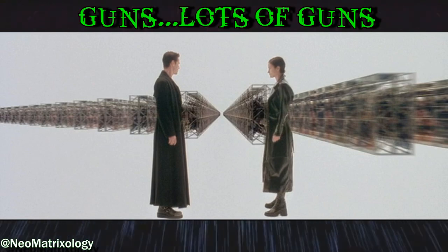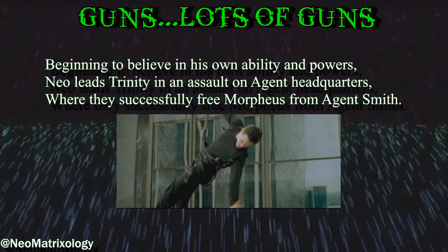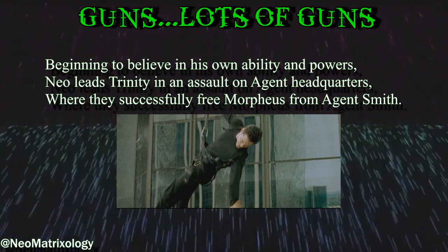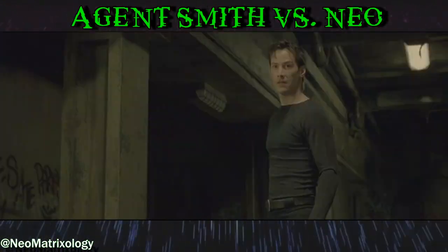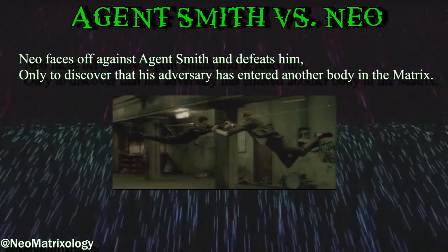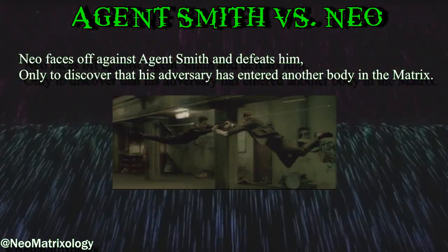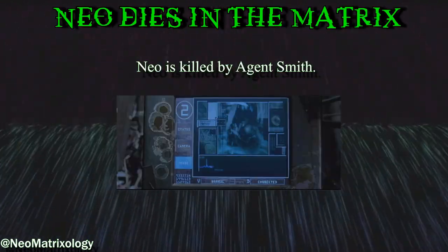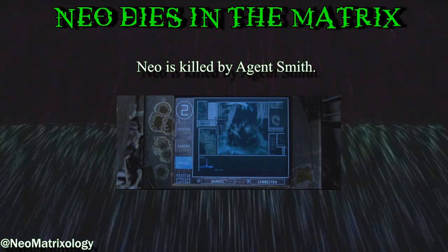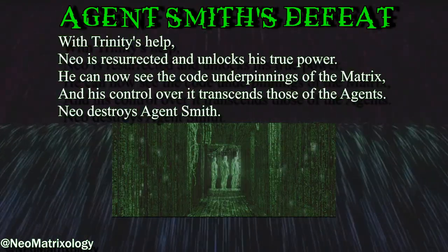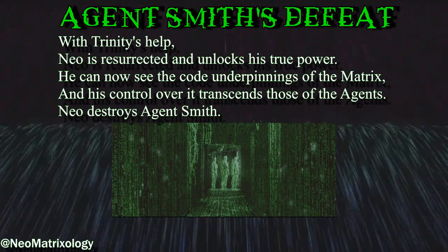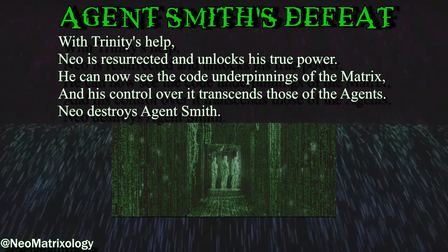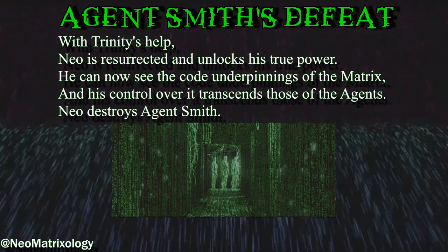Guns — lots of guns. Beginning to believe in his own ability and powers, Neo leads Trinity in an assault on Agent Headquarters where they successfully free Morpheus from Agent Smith. Agent Smith vs Neo: Neo faces off against Agent Smith and defeats him, only to discover that his adversary has entered another body in the Matrix. Neo dies in the Matrix — Neo is killed by Agent Smith. Agent Smith's defeat: with Trinity's help, Neo is resurrected and unlocks his true power. He can now see the code underpinnings of the Matrix and his control over it transcends those of the agents. Neo destroys Agent Smith.